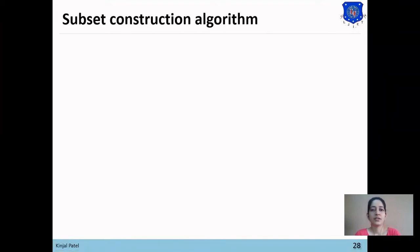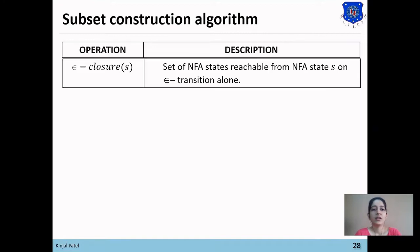Subset construction algorithm. The first operation is to find the null closure of state S, which means finding the number of states reachable from NFA state S on null transitions alone. For example, if we have state 1 and it has one null transition to state 2, then in the null closure of state 1, state 2 will be included.